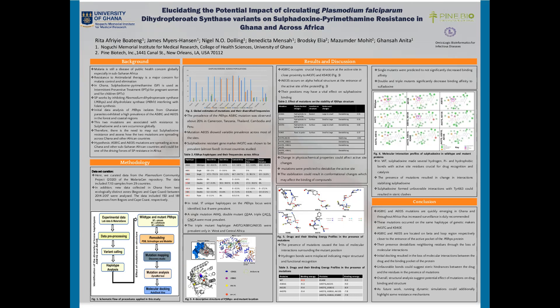We hypothesize that the two mutations — alanine 581 mutated to glycine and alanine 613 mutated to serine — are spreading across Ghana and other sub-Saharan African countries, and could be one of the driving forces of resistance in Africa.